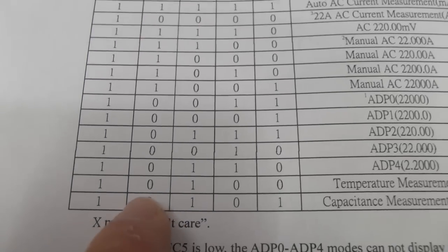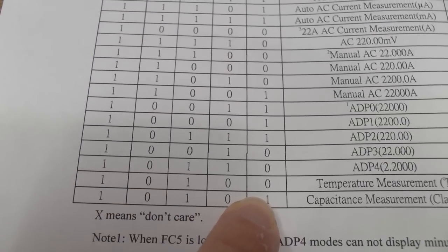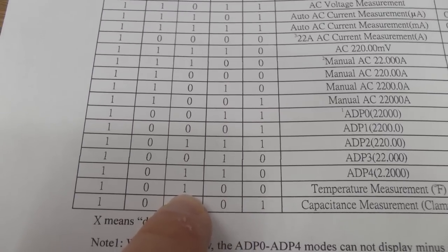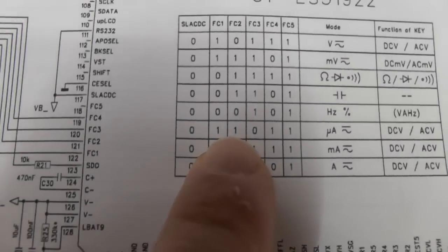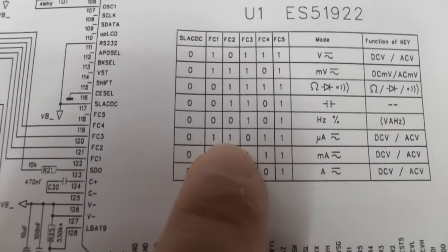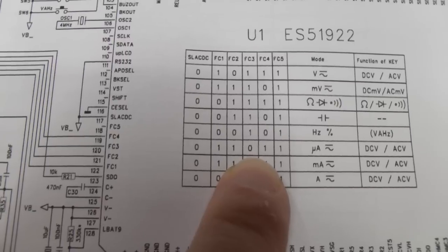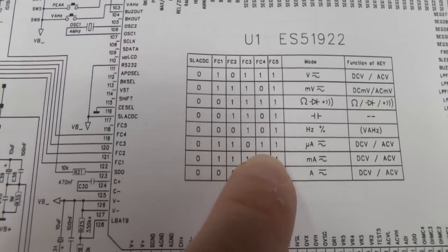As you can clearly see, FC1 and FC4 are low. In this mode, FC2 is high and FC3 is low that we have in the microamp mode. FC2 is high, FC3 is low, and FC1 and FC4 are low because they're faulty.